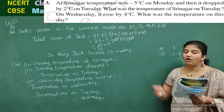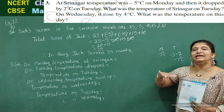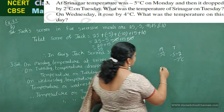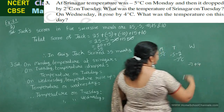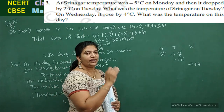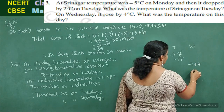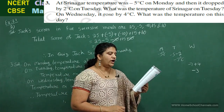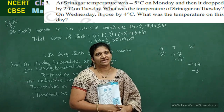On Wednesday, temperature rose by 4 degrees Celsius. Rose means increased — we use addition. Minus 7 plus 4. Both have different signs, so subtract the smaller from the bigger and take the sign of the bigger number: 7 minus 4 equals 3, sign is minus, so the result is minus 3 degrees Celsius. Temperature on Wednesday is minus 3 degrees Celsius.